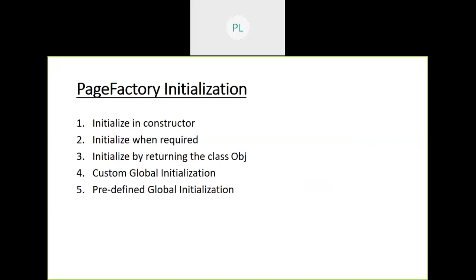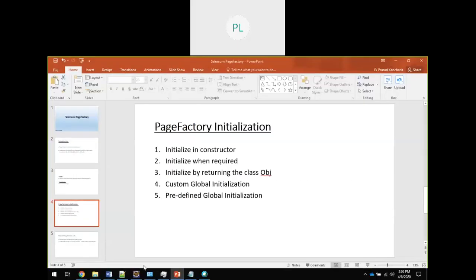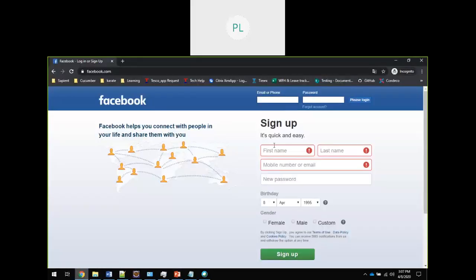Coming back to the core: we can initialize Page Factory in five different ways. First is initializing within the constructor. Second is initializing when required. Third is initialized by returning the class object. The fourth and fifth — which I personally prefer — are custom global initialization and predefined global initialization. The HTML page I'm using is Facebook, and I'll be using only the first name, last name, and mobile/email text fields to keep the focus limited.